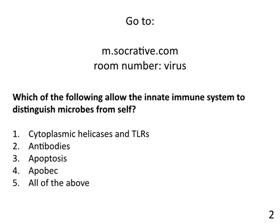Our next question: which of the following allow the innate immune system to distinguish microbes from self? The answer is number one — cytoplasmic helicases and toll-like receptors. Antibodies do something different. Apoptosis is just an intrinsic response to stress and doesn't recognize anything as foreign. APOBEC similarly. So it is just cytoplasmic helicases and toll-like receptors.